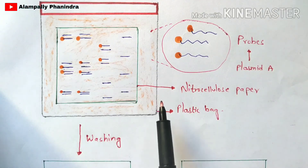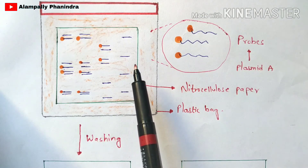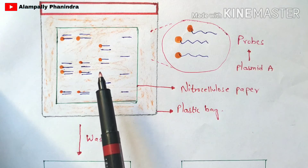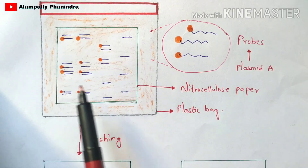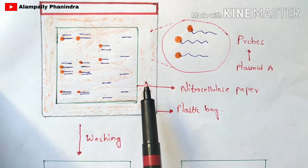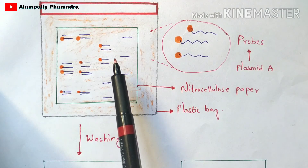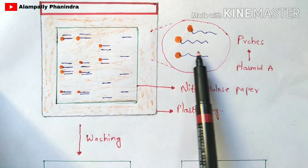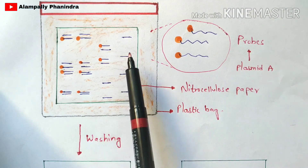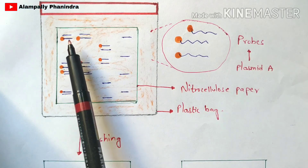You have added these probes into the plastic bag, and now you place the nitrocellulose paper — which contains the separated strands from gel electrophoresis — into this plastic bag. The DNA strands on the nitrocellulose paper will act as template strands to which the DNA probes, being complementary, will bind. The probes move toward the nitrocellulose paper and find their particular template strand to bind.